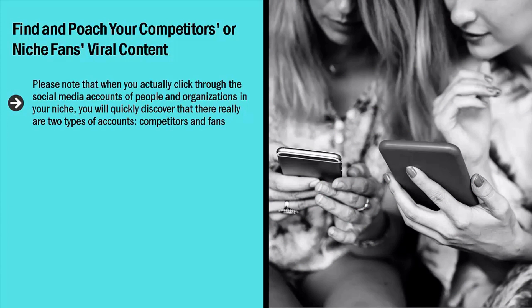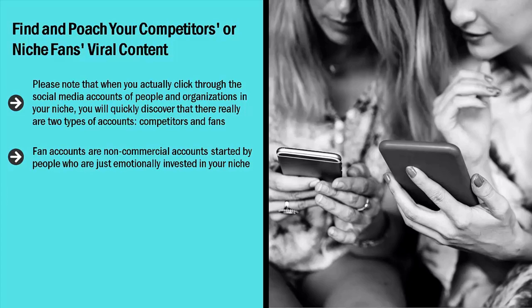When you actually click through the social media accounts of people and organizations in your niche, you will quickly discover that there are really two types of accounts: competitors and fans. Fan accounts are non-commercial accounts started by people who are just emotionally invested in your niche. For example, if you are promoting dog training online courses, you might retrieve a large list of puppy training social media accounts. When you look at their content, it's obvious they're not doing this for money — they're just sharing their interests or enthusiasm. These are fan accounts. You need to gather a big list of these as well.